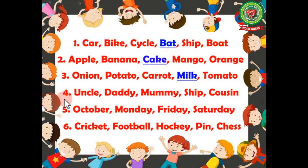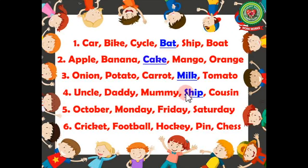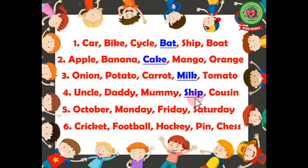Number four: uncle, daddy, mummy, ship, cousin. The odd one here is 'ship'. Uncle, daddy, mummy, and cousin are all names of persons, so they are common in that category, but ship is a name of a thing, so it is the odd one here. Our answer is 'ship'.